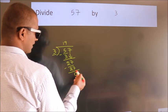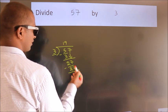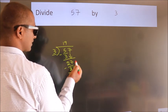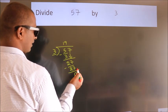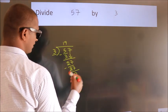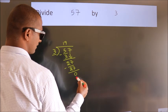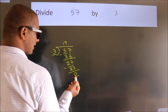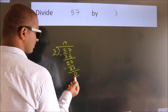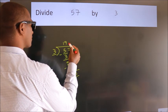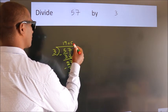After this, there are no more numbers to bring down, and we got remainder 0. So this is our quotient.